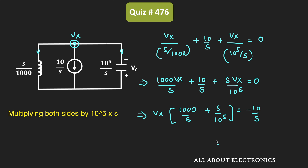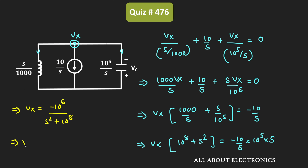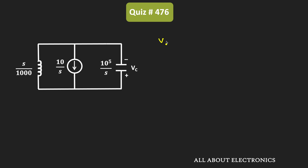Multiplying both sides by 10⁵ × S, we get Vx × (10⁸ + S²) = −10⁶. So Vx is equal to −10⁶ divided by (S² + 10⁸). Now, the polarity of Vc is exactly opposite to Vx, so Vc = −Vx, which equals 10⁶ divided by (S² + 10⁸). This is the S-domain expression for the voltage across the capacitor.